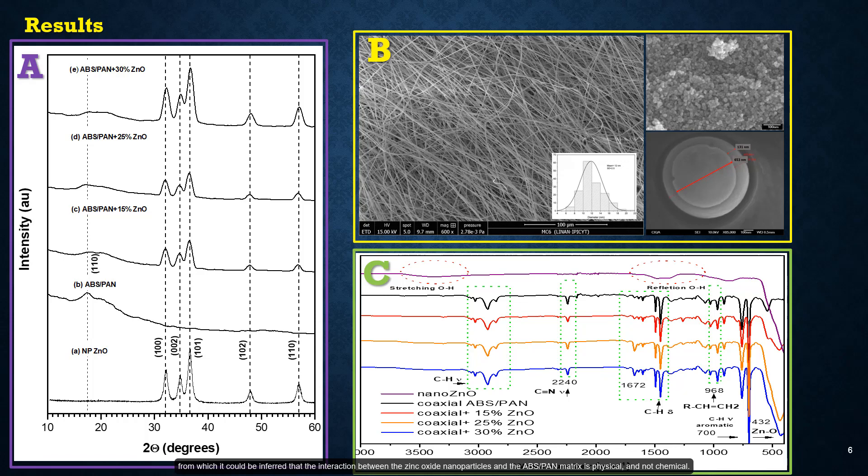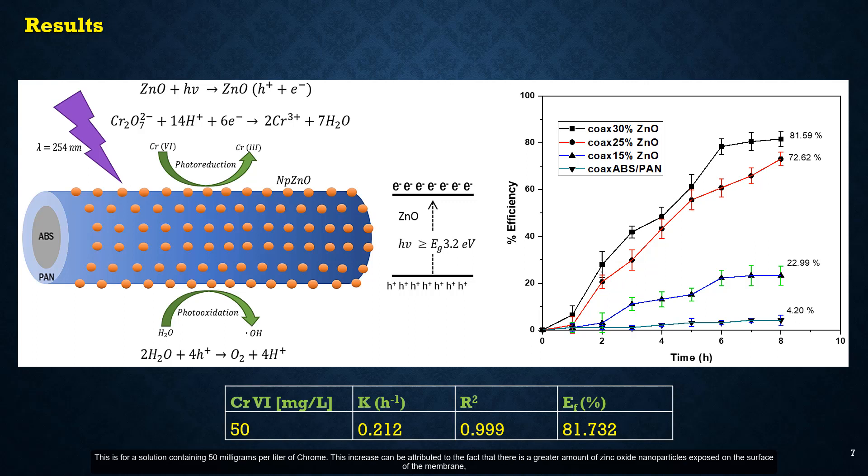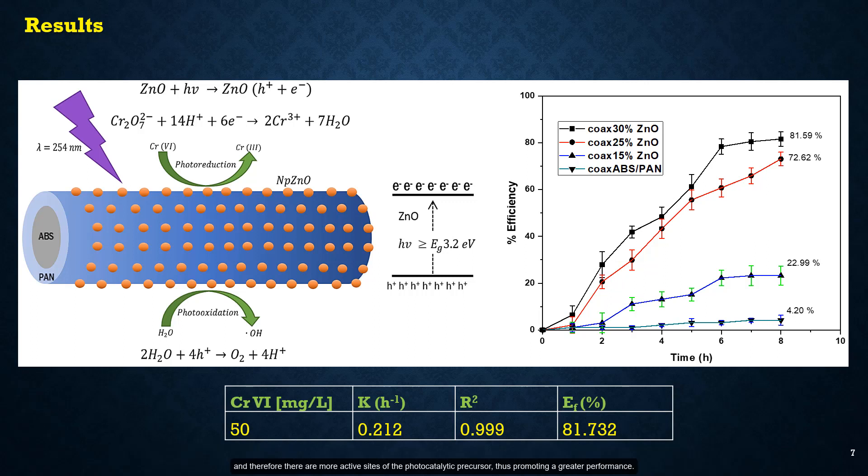The results of photocatalysis show that as the concentration of zinc oxide nanoparticles in the polymeric membrane increased, the efficiency of reduction of chrome also increased, reaching values of 22.99, 72.62, and 81.59% at concentrations of zinc oxide nanoparticles of 15, 25, and 30 weight percent respectively. This is for a solution containing 50 mg per liter of chrome. This increase can be attributed to the fact that there is a greater amount of zinc oxide nanoparticles exposed on the surface of the membrane, and therefore there are more active sites of the photocatalytic precursor, thus promoting greater performance. The membrane with a concentration of 30% of zinc oxide nanoparticles exhibited better photocatalytic performance for all the chrome concentrations evaluated.